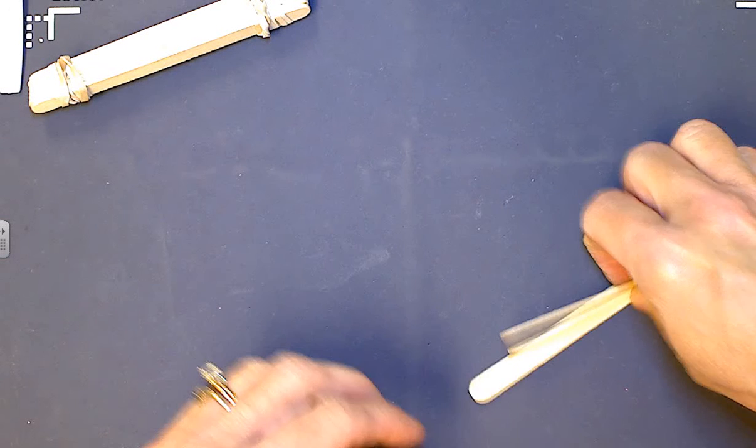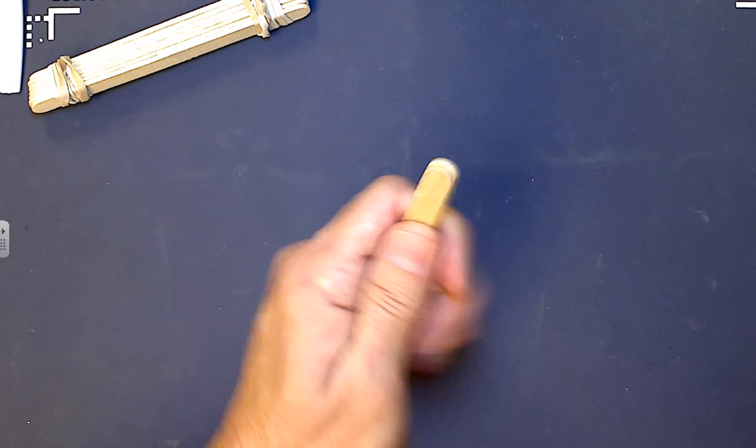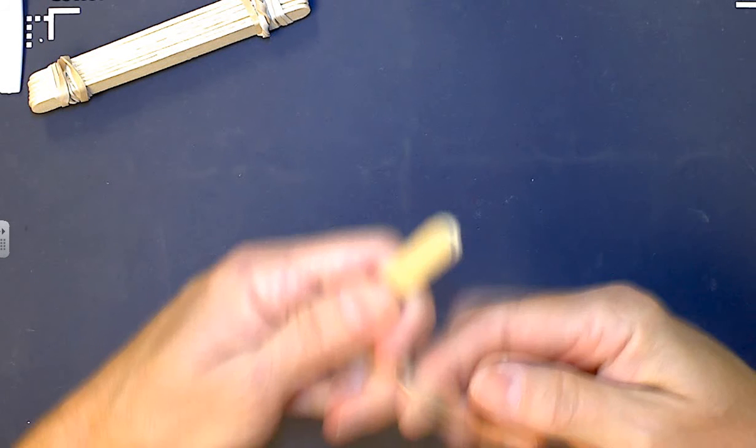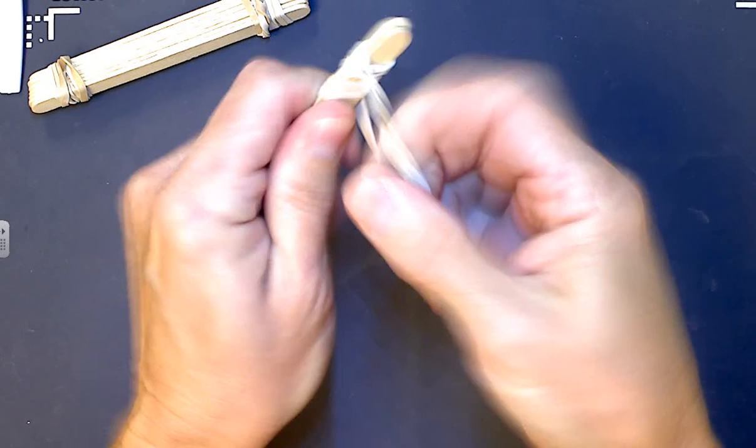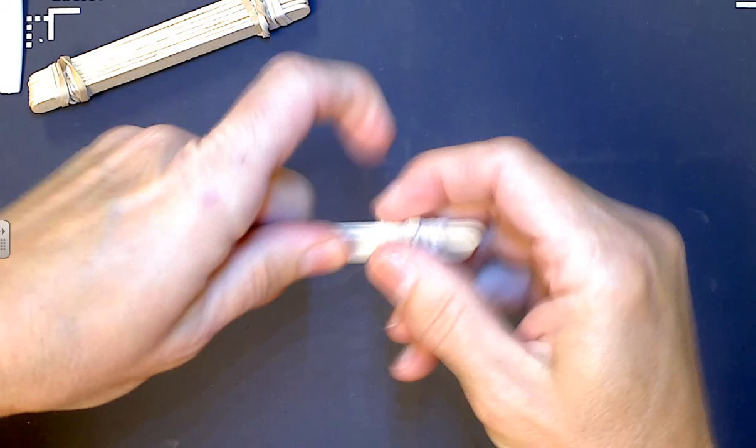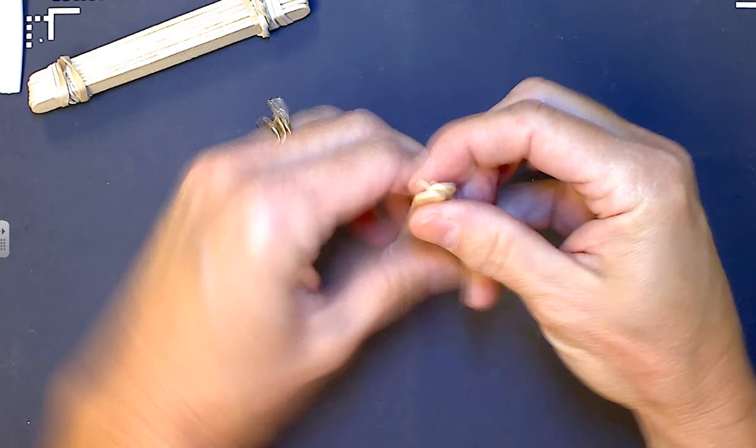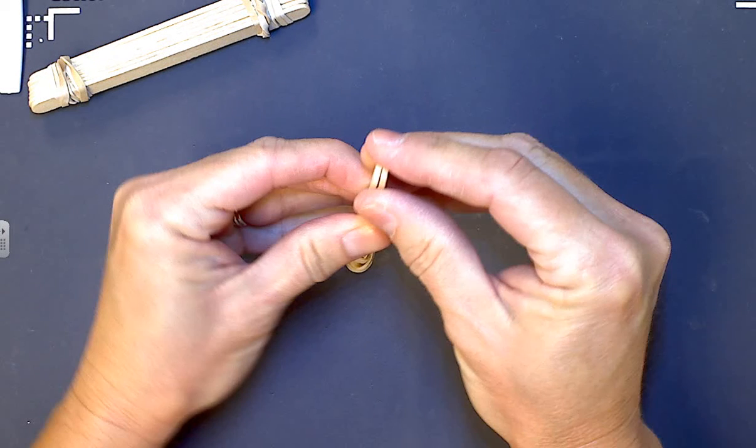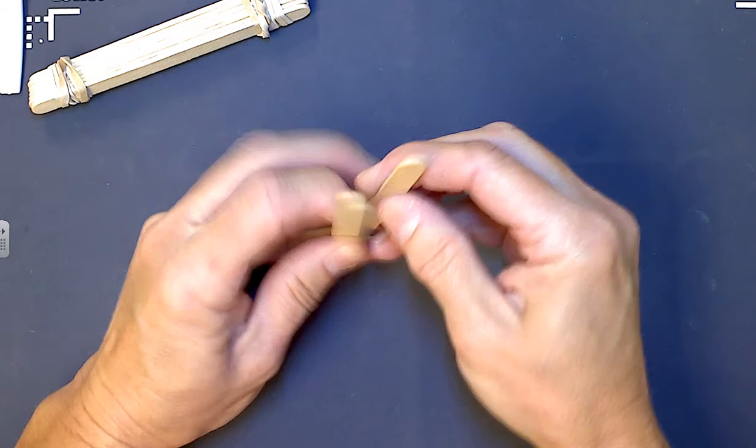Now you take two and you do the same thing, only for these two, we're only going to put the rubber band on one end. So that when you're done, you have something that looks like a little duck's mouth that can open up. Okay, you see how that opens up? Right?